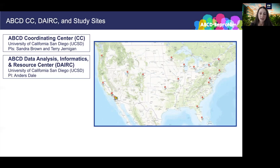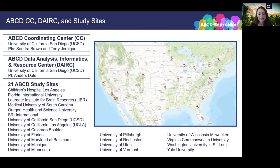Note that the DARC was originally established as the Data Analysis and Informatics Center, or DAIC, so you may see that term in older publications, but it means the same as the current DARC. Finally, ABCD includes 21 different study sites responsible for participant recruitment, enrollment, and baseline data collection during the first two years of the study, and continue to be responsible for participant retention and data collection across additional waves of this 10-year longitudinal study. These sites are geographically distributed across four major regions of the continental U.S. — the Northeast, Midwest, South, and West — and are demographically and socioeconomically diverse.